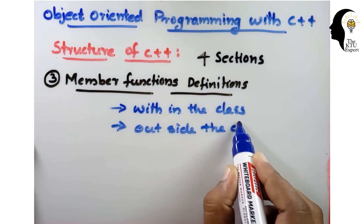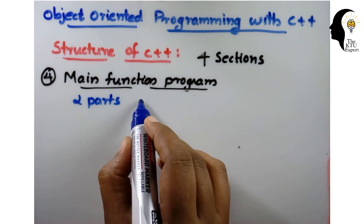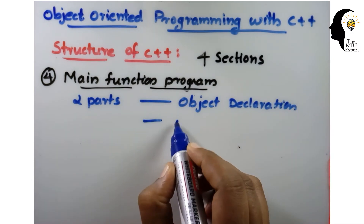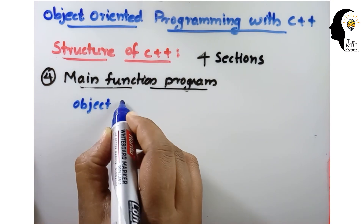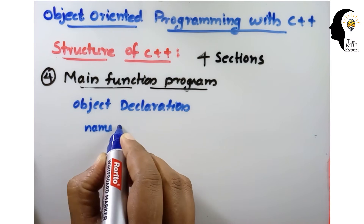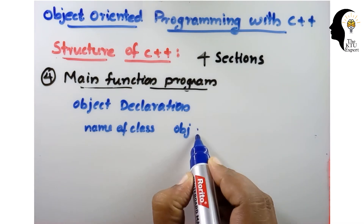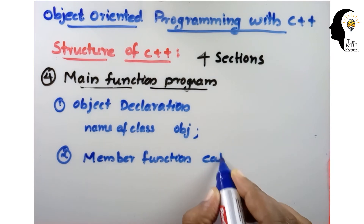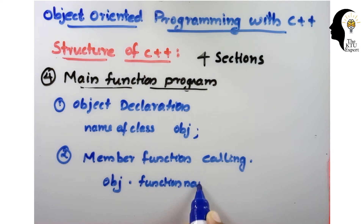The fourth section is the main function. The main function contains two parts: first, object declaration, and second, member function calling. For object declaration, we write the class name followed by the object name. For member function calling, we use the object name with the dot operator, then write the name of the function being called. The dot operator is used for calling the function.